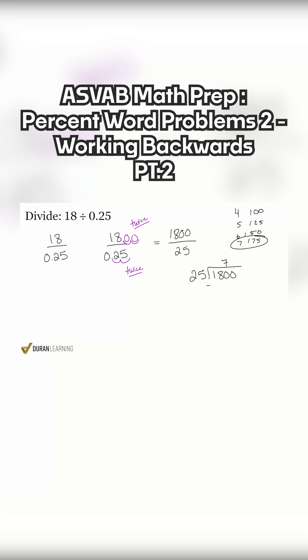And so we'll subtract 175, giving us a remainder here of 5. And so then we drop that 0, and we ask ourselves, how many times does 25 go into 50?